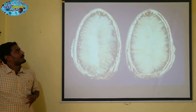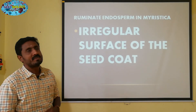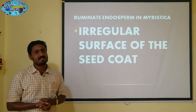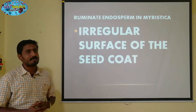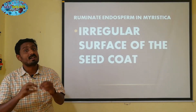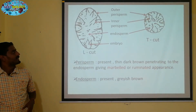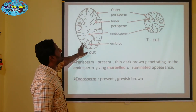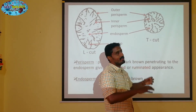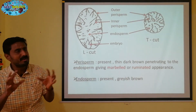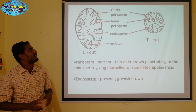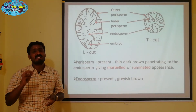Aristolochia and Annonaceae are the second example. The third example is Myristica. Myristica means Jadikai (nutmeg). In Myristica there is an irregular surface of the seed coat. In this case, Myristica in L-cut (longitudinal section) and T-cut (transverse section) shows an irregular surface of the seed coat — it is a straight irregular surface.